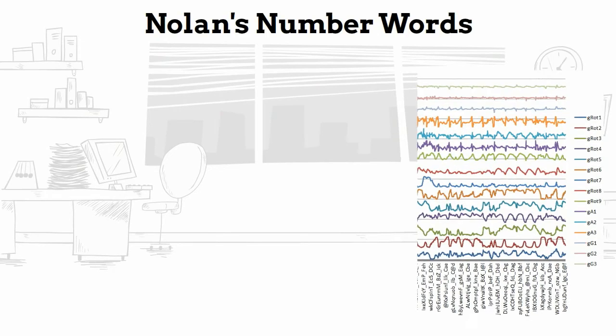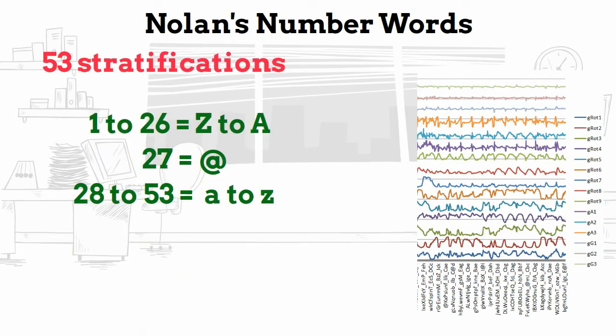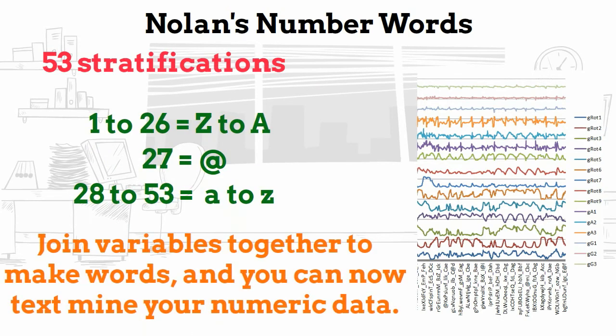By stratifying your variables and concatenating the results to make words, you can now text-mine your data, as the human brain works better with letter grouping than number grouping. Patterns are easier to see.